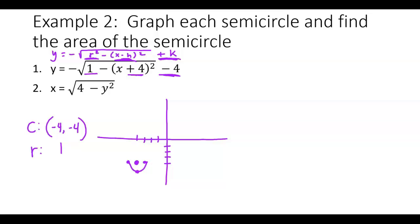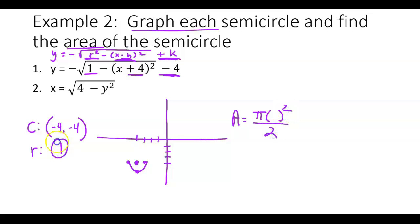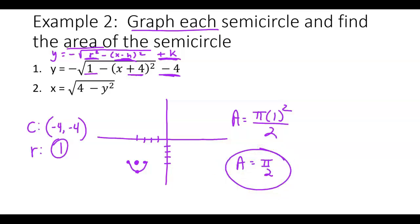They want us to find the area. Area is pi r squared, but it's a half circle, so it's pi r squared divided by 2. My radius is 1, so I end up with area equals pi over 2 for that semicircle.